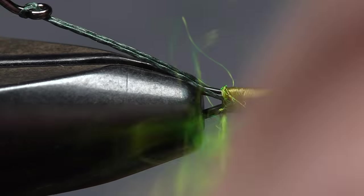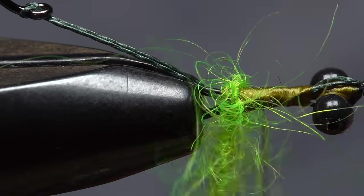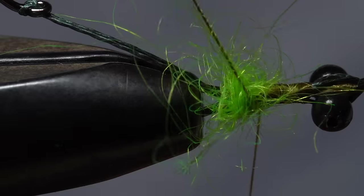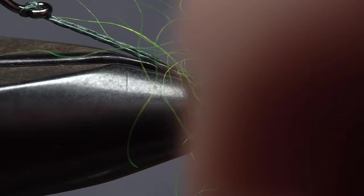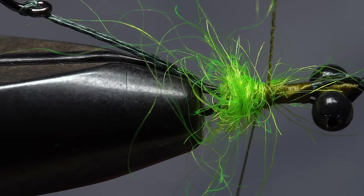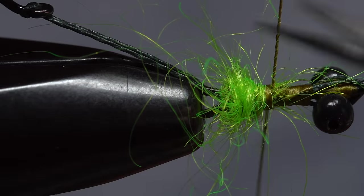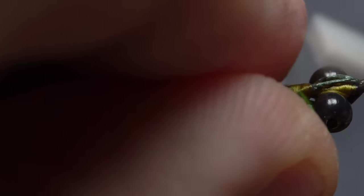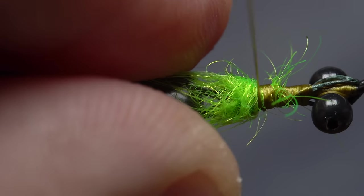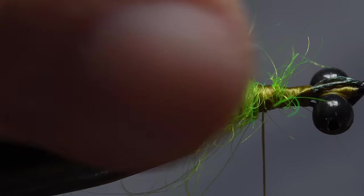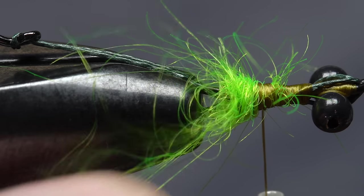Take touching or overlapping wraps with the noodle to build up an ample hot spot at the rear of the fly. This bump will also help to support the pine squirrel tail which will be tied in next. With the dubbing loop secured, snip the excess off close. Preen any forward pointing material rearward and take thread wraps to hold it back. Loose and scraggly is okay for the hot spot.